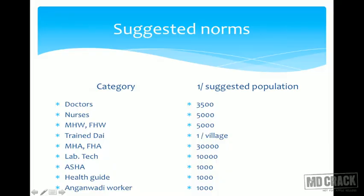The suggested norms for health workers based on general population: one doctor per at least 3500 population, one nurse per 5000 population, one male health worker per 1000 population, one lab technician per 10,000 population, one ASHA per 1000 population, and one Anganwadi worker per 1000 population. The Dai, ASHA, Village Health Guide, and Anganwadi worker are all expected at one per 1000 general population. All suggested norms are based on general population — don't be fooled if an MCQ changes the denominator.